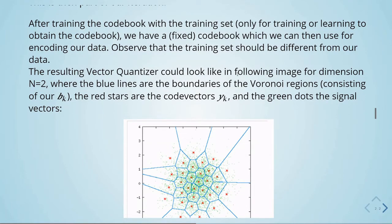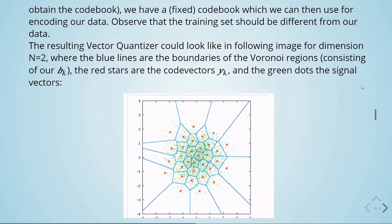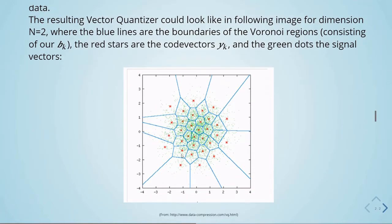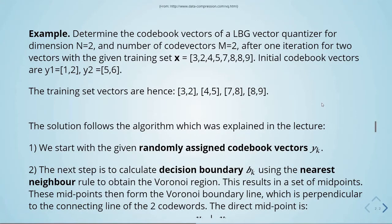The resulting vector quantizer for dimension N equals 2 looks like an image where blue lines are the boundaries of the Voronoi regions (B of K), red stars are the code vectors Y of K, and green dots are the signal vectors. As an example: determine the codebook vectors of an LBG vector quantizer for dimension N equals 2 and number of code vectors M equals 2, after one iteration, for the given training set X. The initial codebook vectors are Y1 and Y2. We split the training set into 2-dimensional vectors: (3,2), (4,5), (7,8), (8,9).